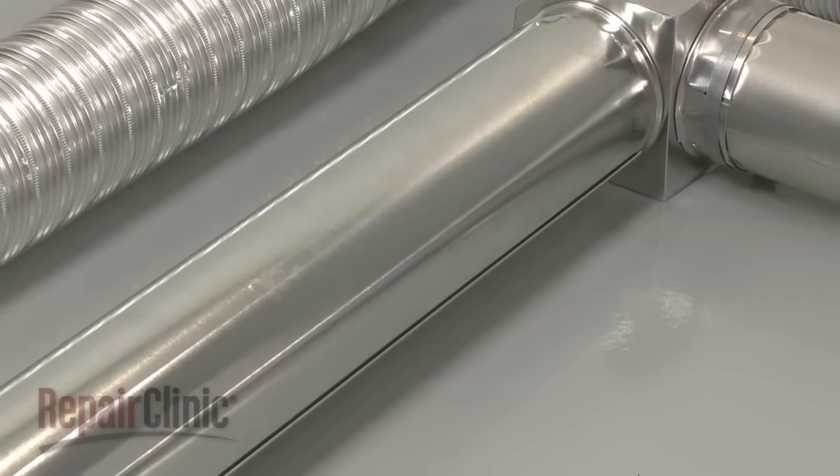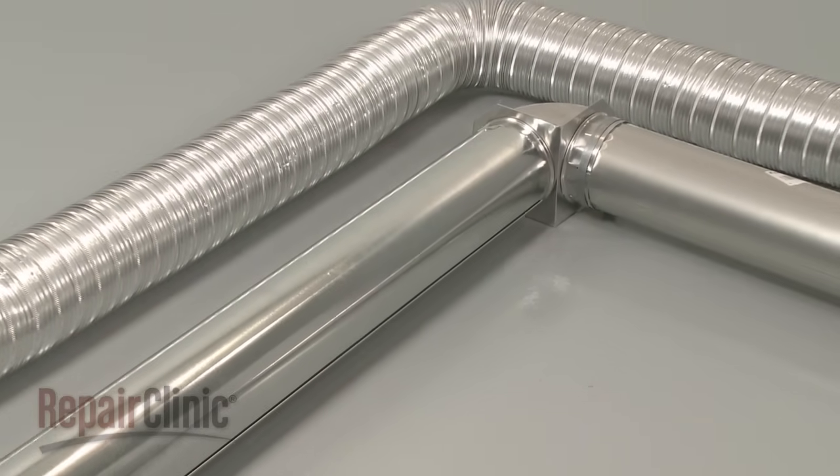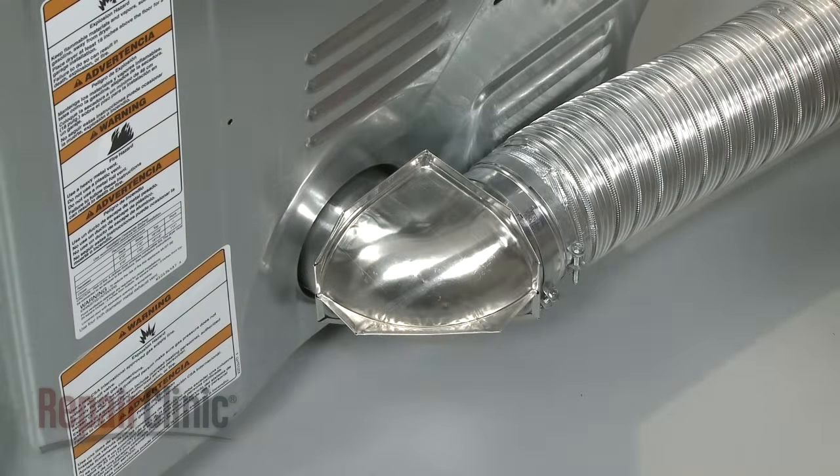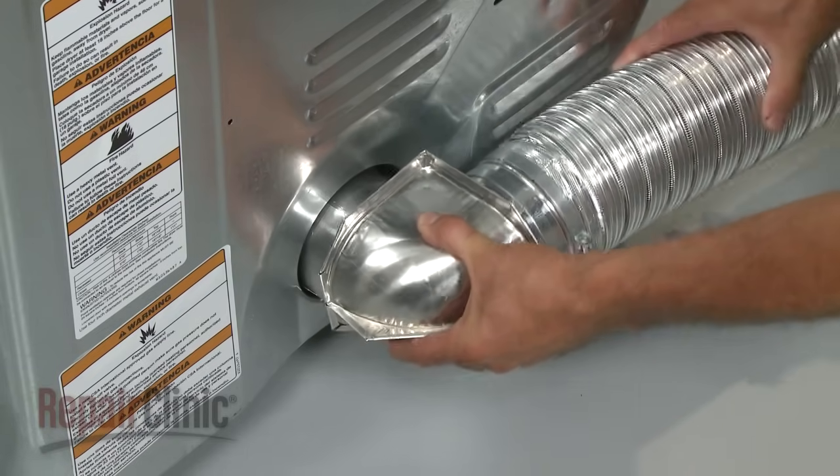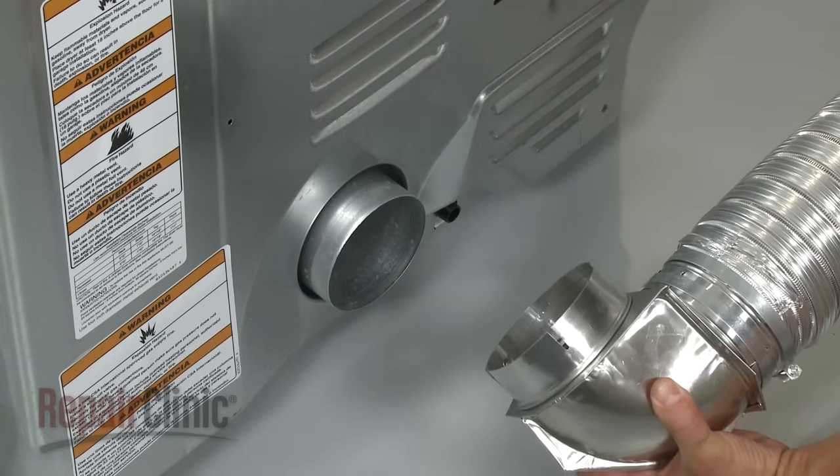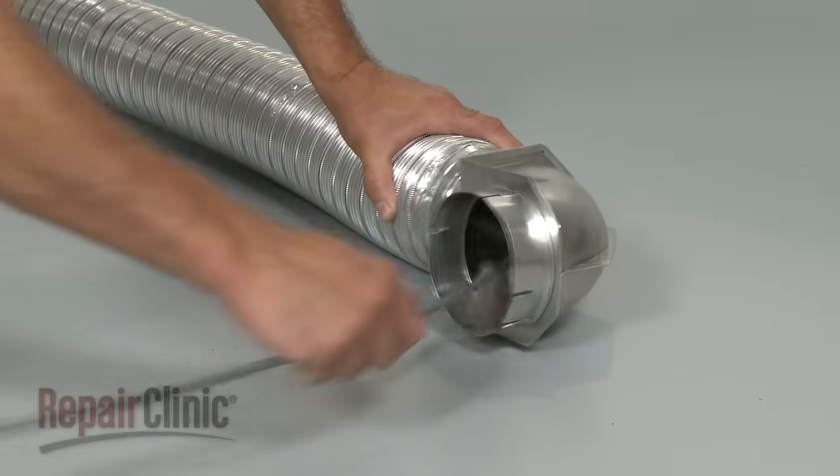Use only rigid or semi-rigid venting. Any other material may increase the risk of fire, as the lint in the vent could ignite during normal operation. Since an exhaust vent clogged with lint is the most common cause of restricted airflow, we recommend cleaning out the vent at least once a year.